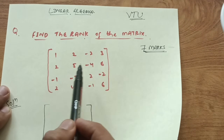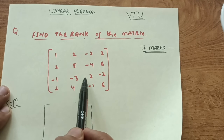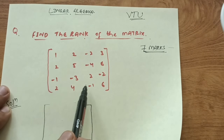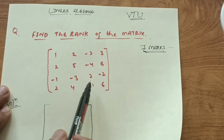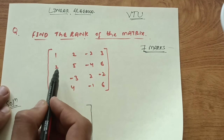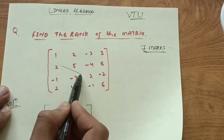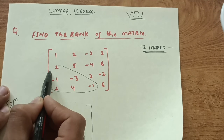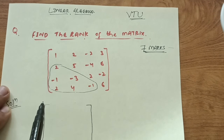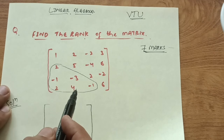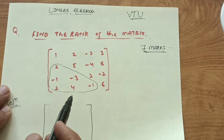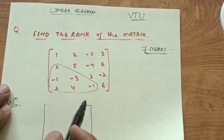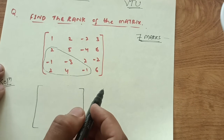The full matrix is: [1, 2, -2, 3], [2, 5, -4, 6], [-1, -3, 2, -2], [2, 4, -1, 6]. We need to make this a lower triangular matrix — that is, make all entries below the main diagonal equal to zero using row transformations.